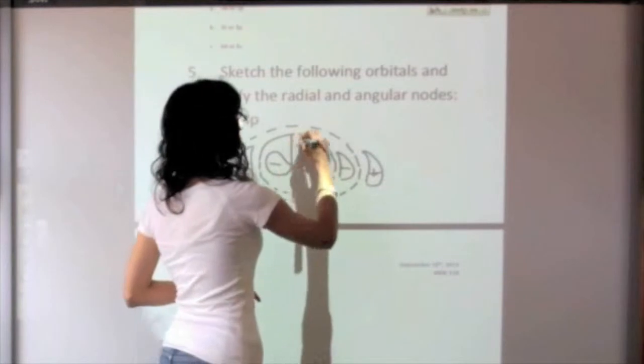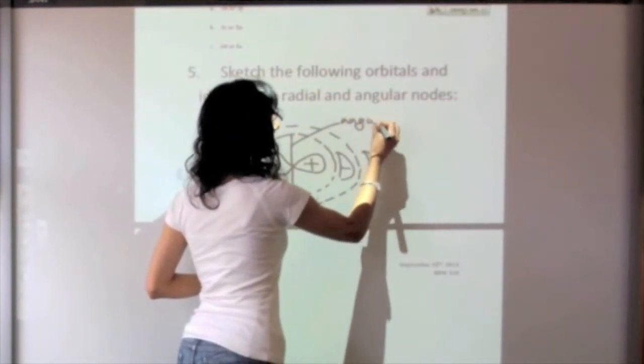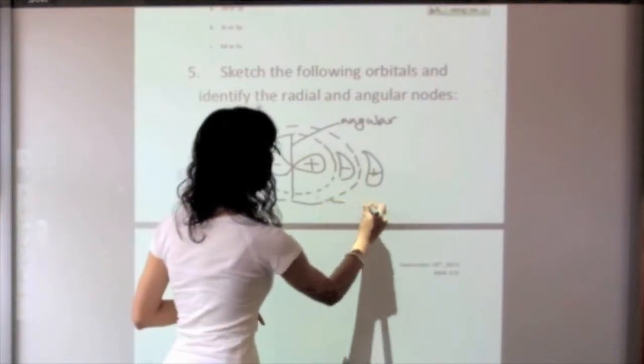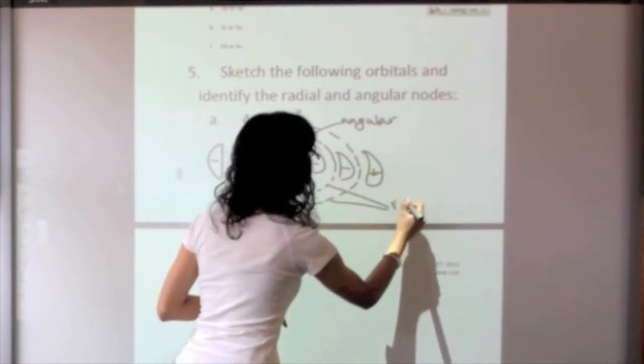Once again, we identified that this is the angular node and these two are going to be the radial nodes.